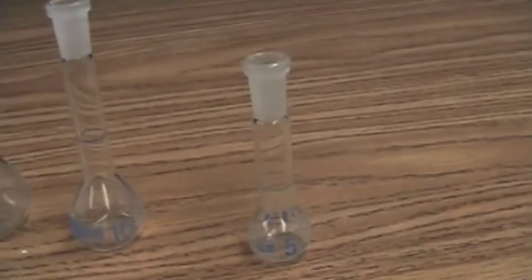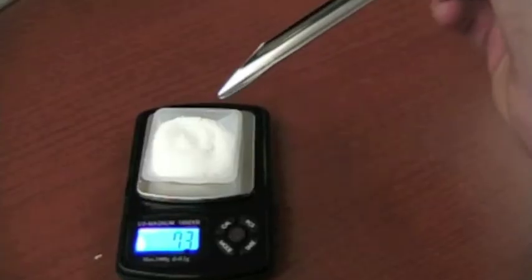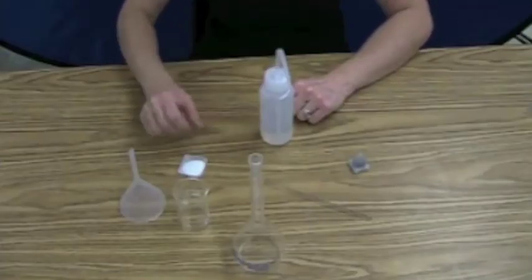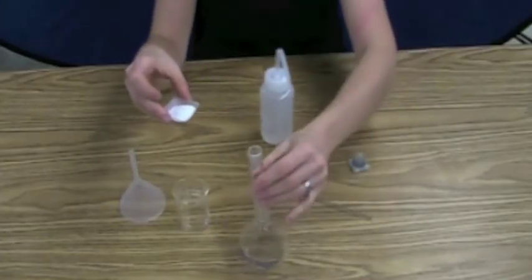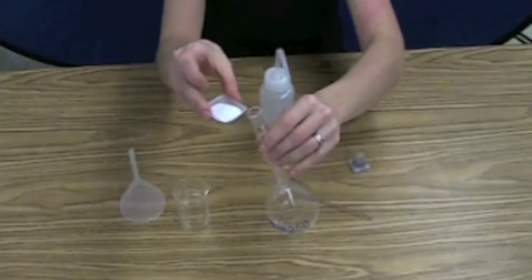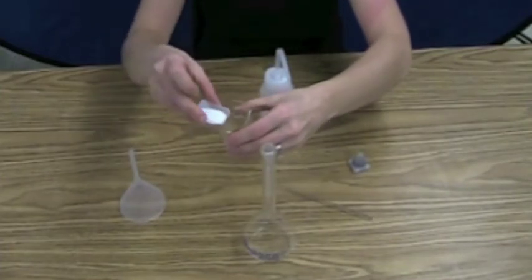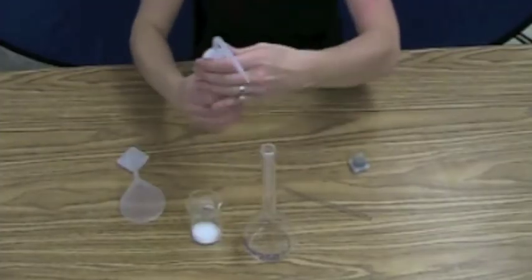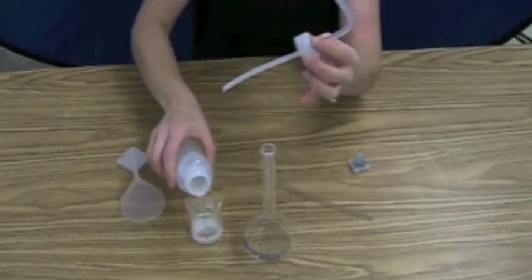The first thing you do when you're making a solution is you measure out how much solute you're going to need. Then you have a choice. You can either take that solute and add it directly to the volumetric flask, but sometimes that's difficult to get a powder into that tiny opening. So the other option is you can put it in a beaker, and then you can dissolve it in a little bit of your solvent, not all of it, but a little bit, so that you can transfer it to the volumetric flask a little easier.